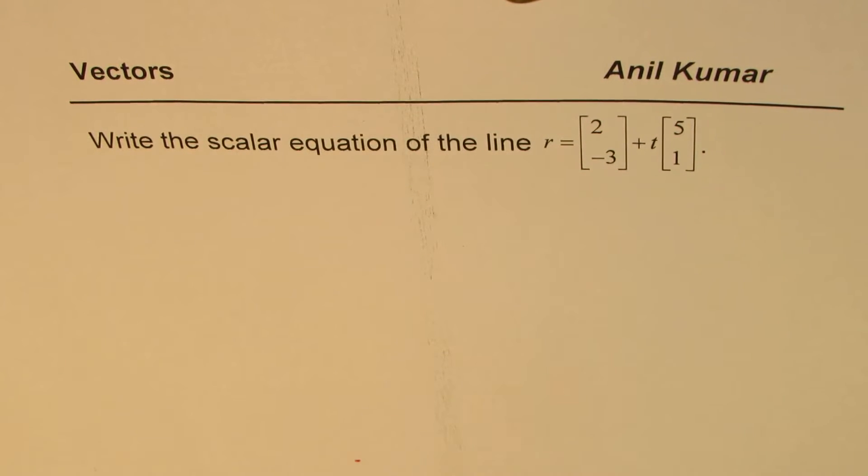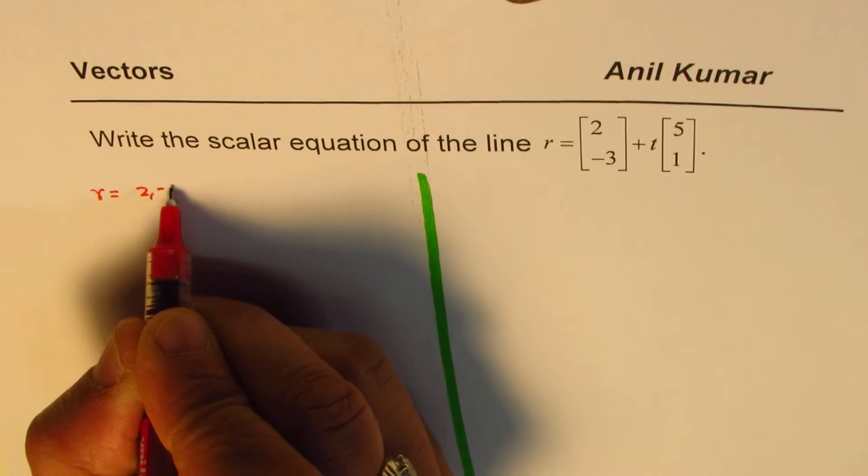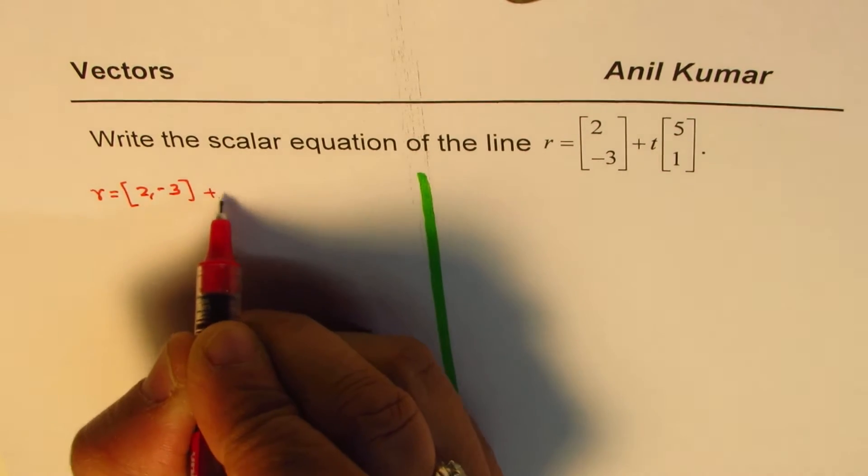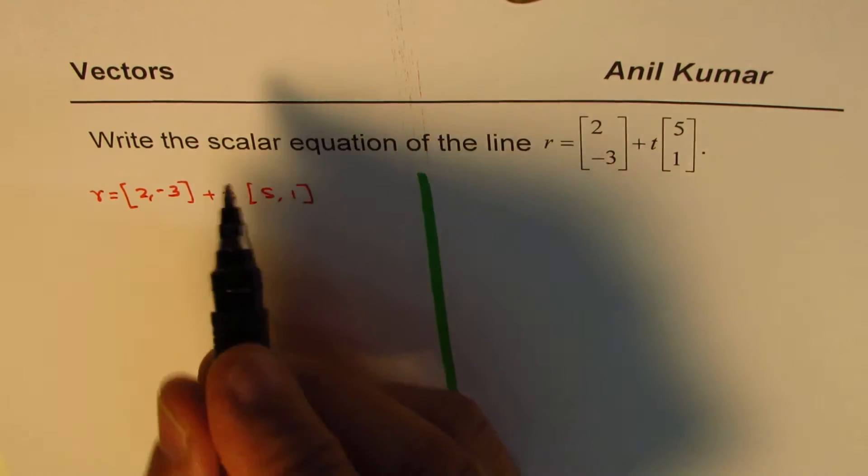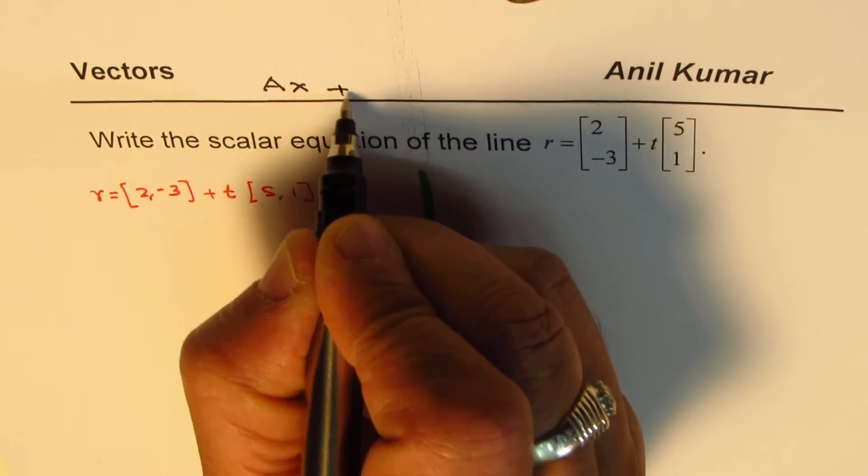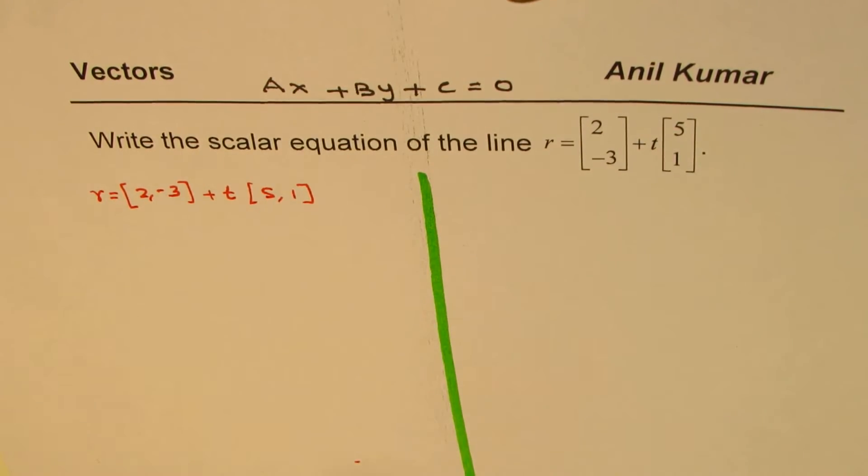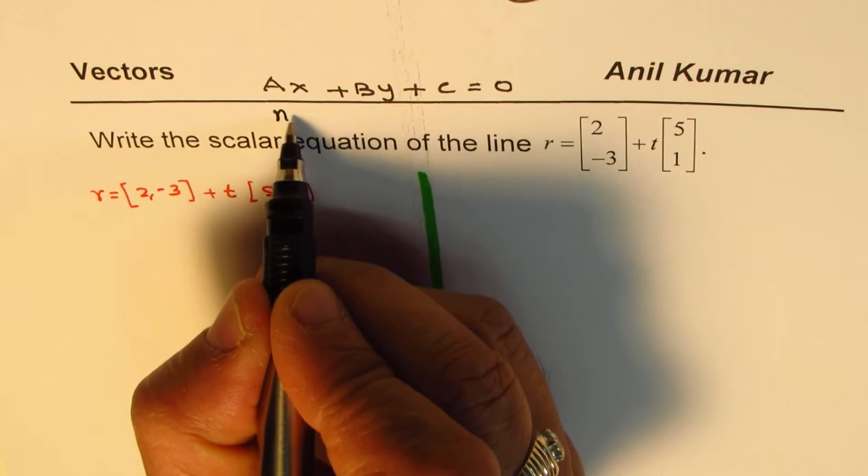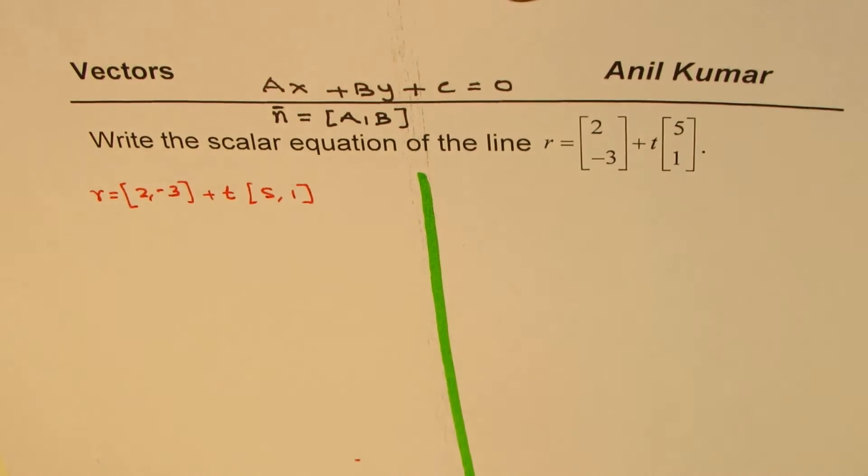Now I'll use two different ways of finding this scalar equation. Let me divide this in two parts. So let me rewrite the equation of the line: r equals (2, -3) plus t(5, 1). I hope you remember what is scalar equation - it is of the form ax plus by plus c equals 0 in R2, right? So we need to write in this form, where a and b are actually normals. In this equation, the normal vector is actually (a, b). That is what the scalar equation is.